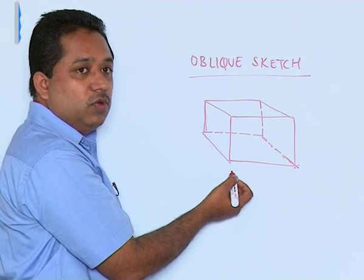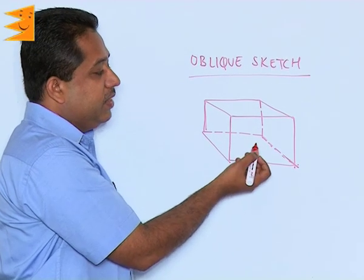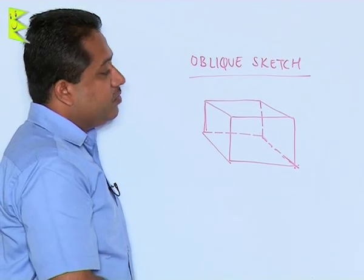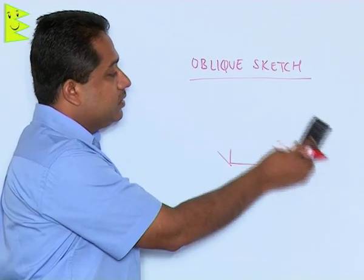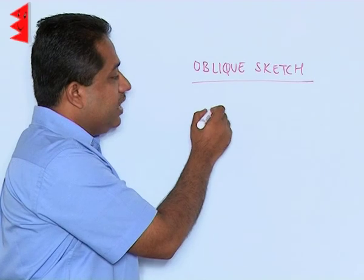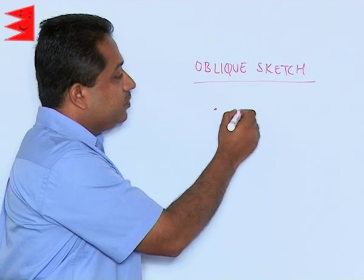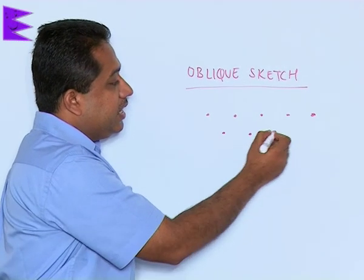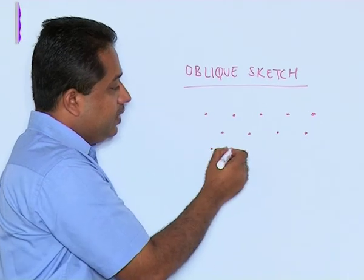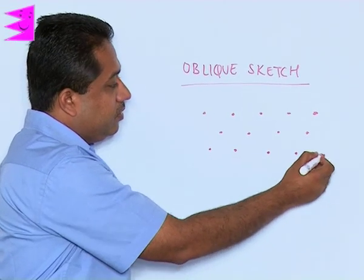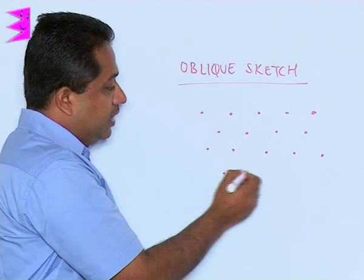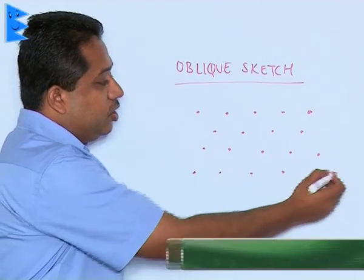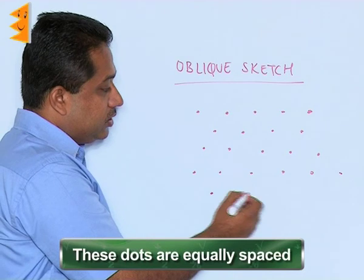So we can easily draw oblique sketches of cubes, cuboids, and so on. If we want exact dimensions, we have to draw using isometric dots — dots at equal spacing — and then draw the figure using these equally spaced dots.